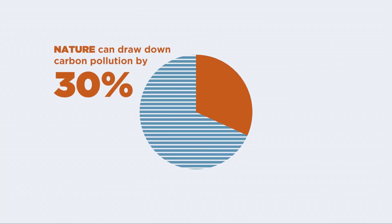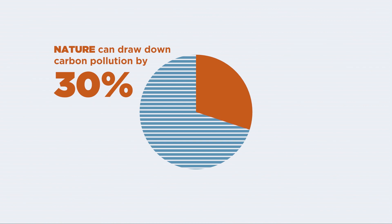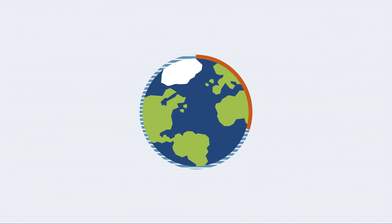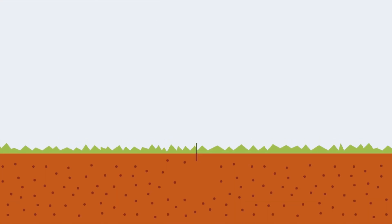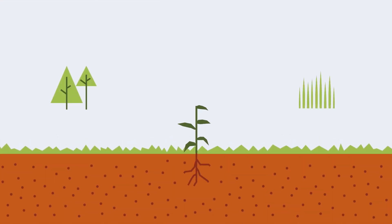In fact, nature alone can help us achieve 30% of the emissions reductions we need to protect people and the planet from the worst effects of climate change. Plants help lessen the impacts of climate change in other ways, too.